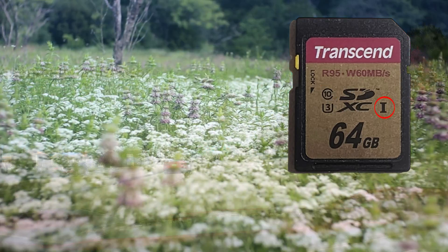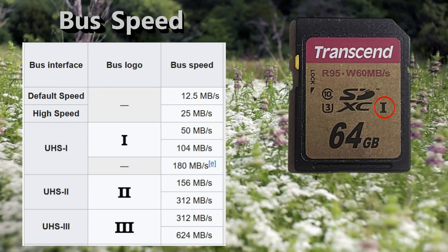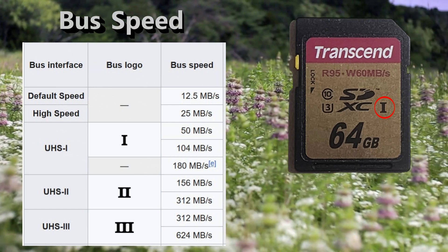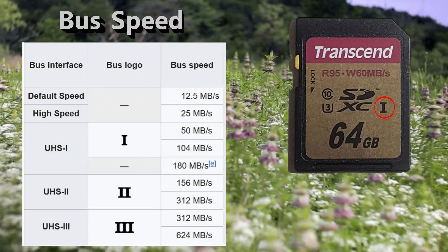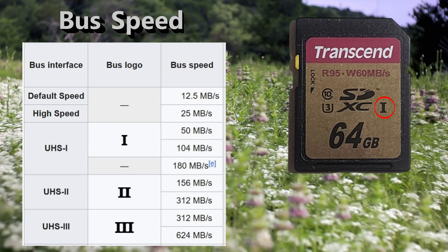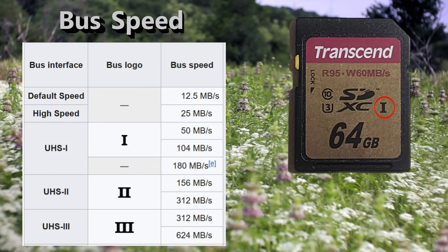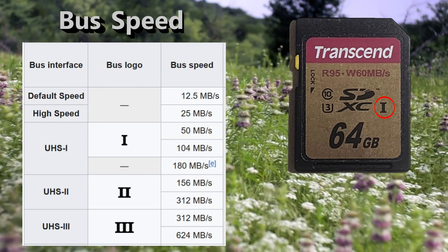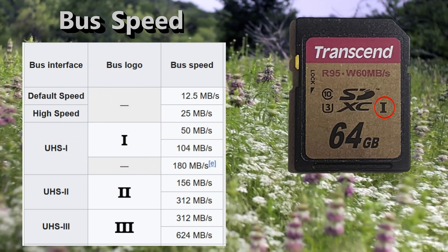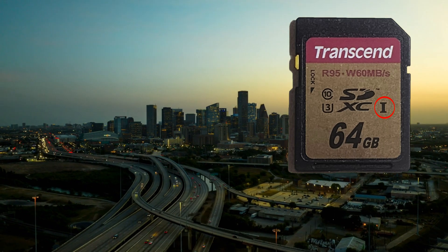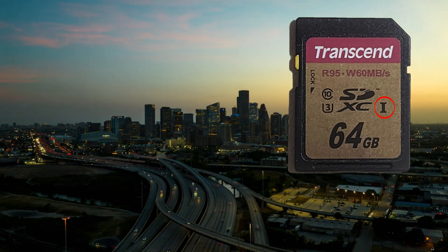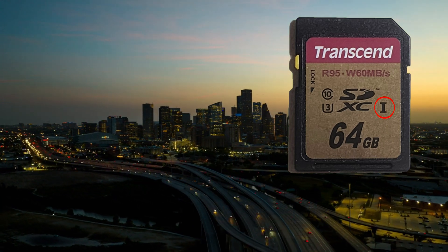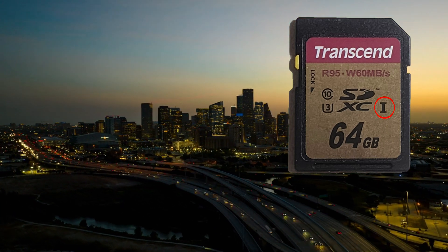In terms of bus speed, there are three: Ultra High Speed 1, Ultra High Speed 2, and Ultra High Speed 3. UHS-3 doesn't even exist yet, and UHS-2 is very rare unless you're into digital SLRs or something that uses a lot of data. All of mine are UHS-1.